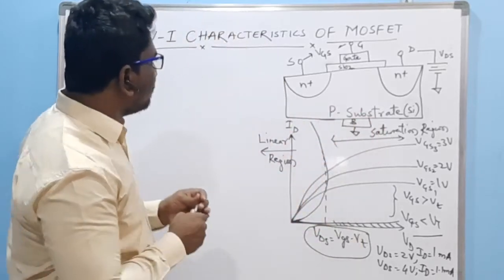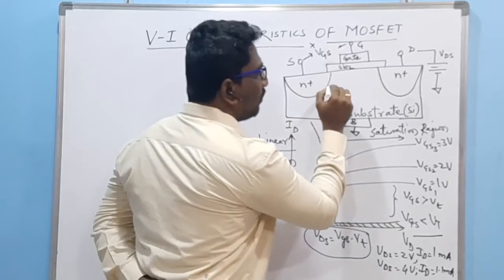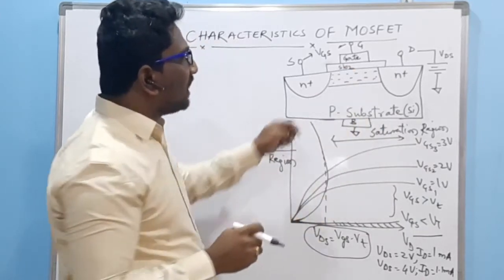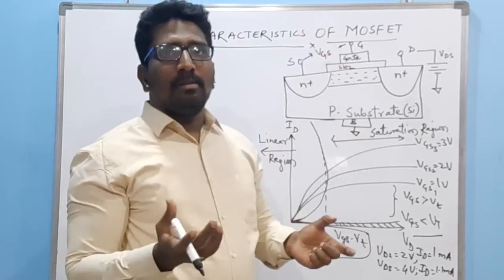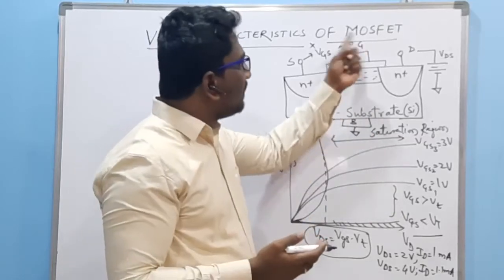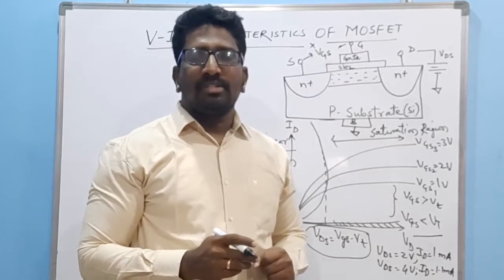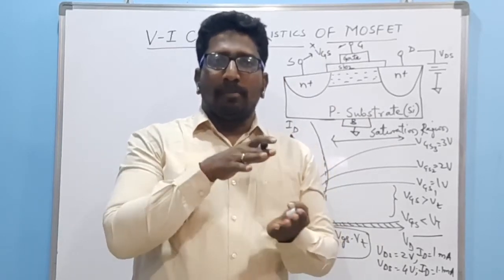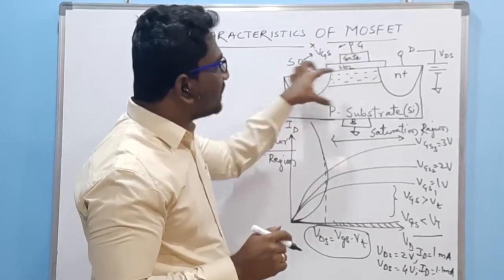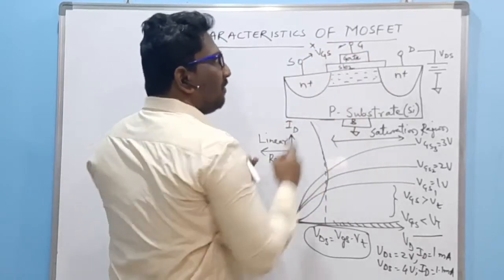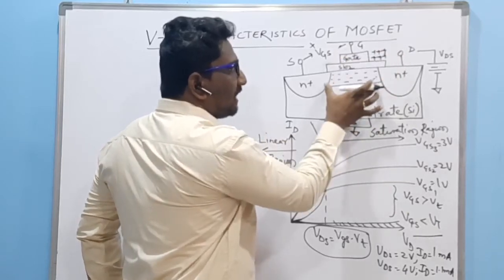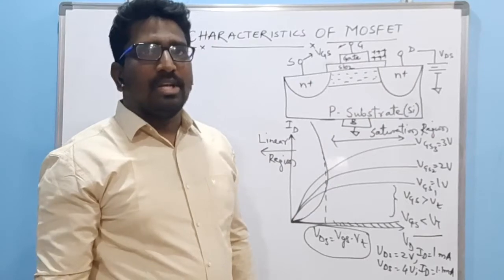To derive the MOSFET VI characteristics, consider that a channel has been formed and charge particles are moving through it. The gate is a metal conductive layer and there is a conduction layer below the SiO2 oxide layer. This structure — two conducting layers separated by an insulator — acts as a MOS capacitor. Applying a positive voltage creates charge accumulation, forming the basis of the derivation.